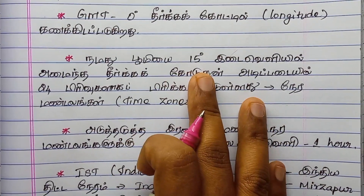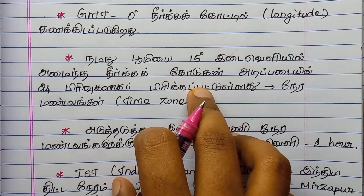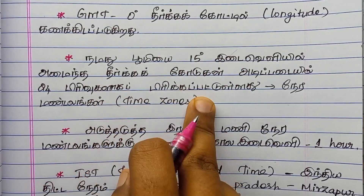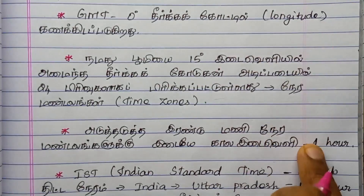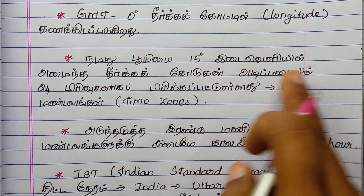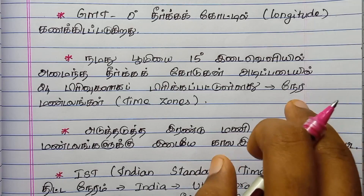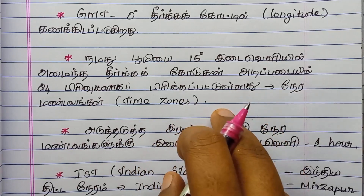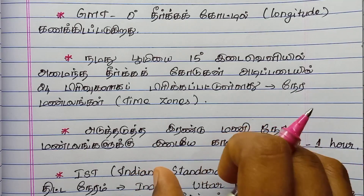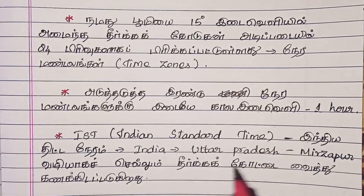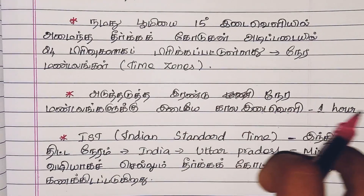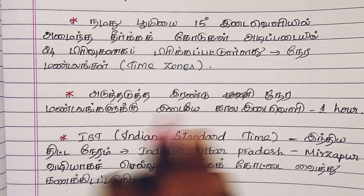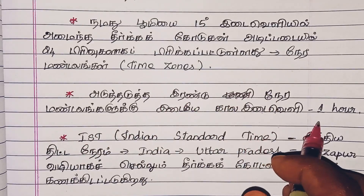The Earth is divided with a wide grid of longitude and latitude. If you look at the top, there are 24 time zones around the Earth. Each time zone corresponds to 15 degrees of longitude. So the time zone difference is 1 hour per 15 degrees.